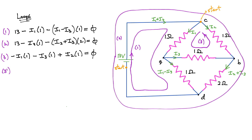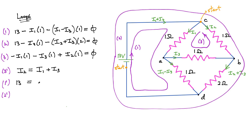From loop three (equation 3): I2 = I1 + I3. I'll use this to eliminate I2 from equations one and two. Substituting into equation one: 13 - I1 - (I1 - I3) = 0, which simplifies to 13 = 2I1 - I3, giving equation one prime: 2I1 - I3 = 13. Both terms on the right are negative, and after bringing them to the other side I'm left with 2I1 and -I3.